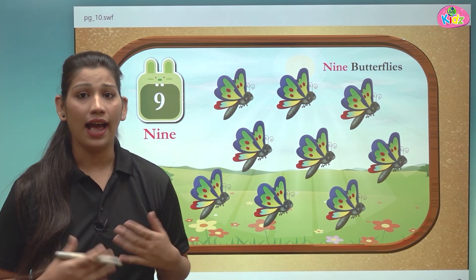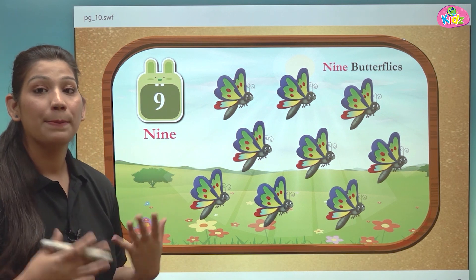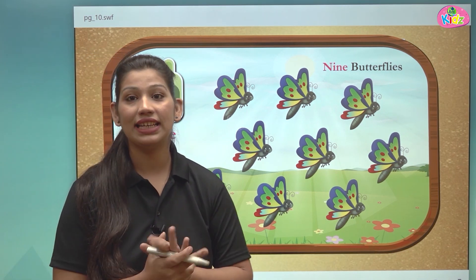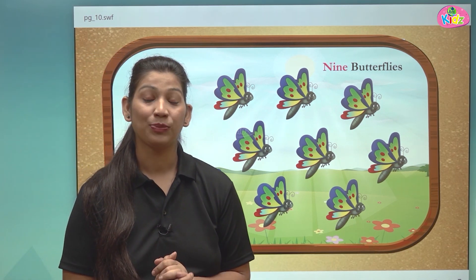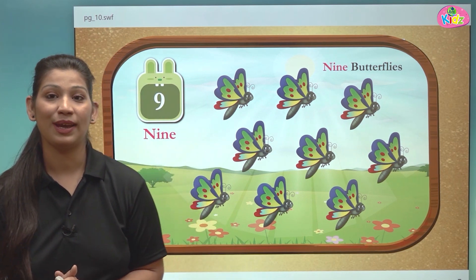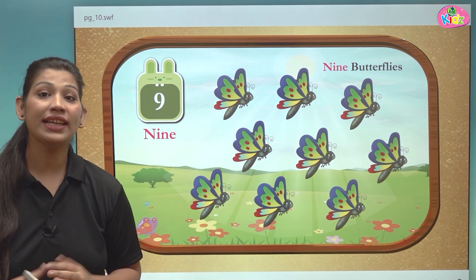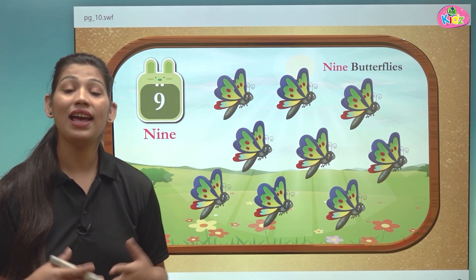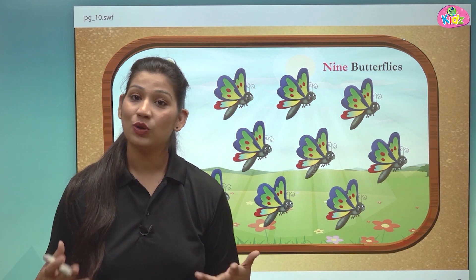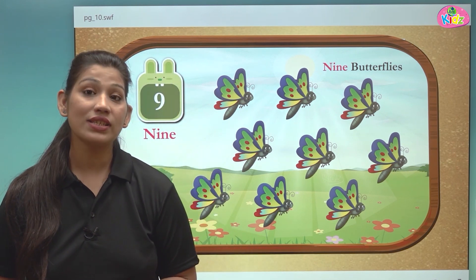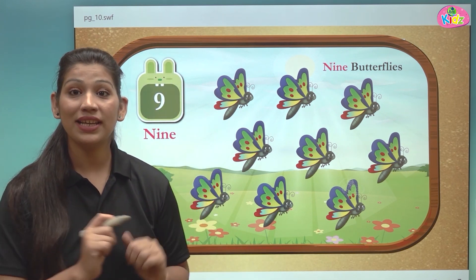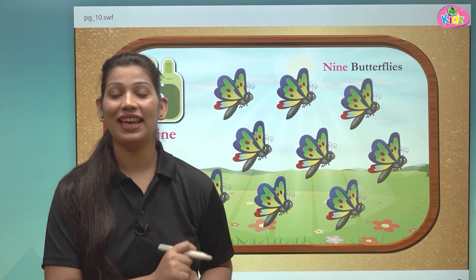Students, aap ne kabhi baseball dekha hai? Baseball ke andar 9 innings hoti hai. Aur baseball me 9 players hi hota hai. Baseball ek game hota hai, outdoor game hota hai jho hum ground me khelte hai. Aur us ke andar total 9 players play karte hai.